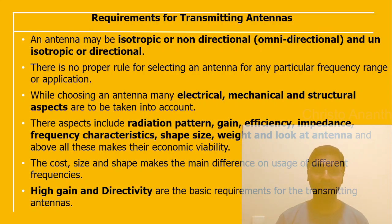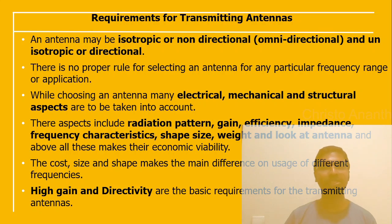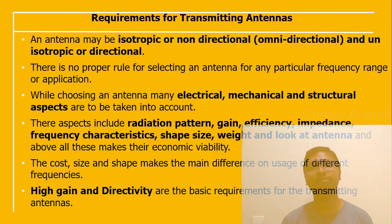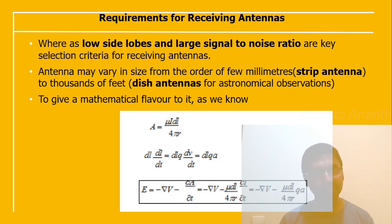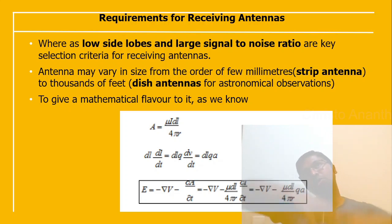Antenna parameters include radiation pattern, gain, efficiency, impedance, frequency characteristics, shape, size, and weight, along with economic viability — cost, size, and shape make a major difference in usage across different frequencies. High gain and directivity are very important requirements for transmitting antennas, whereas low side lobes and larger signal-to-noise ratio (SNR) are key selection criteria for receiving antennas. Antenna size can vary from a few millimeters for strip antennas to thousands of feet for dish antennas used in astronomical observations.